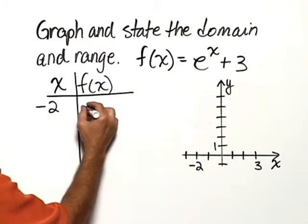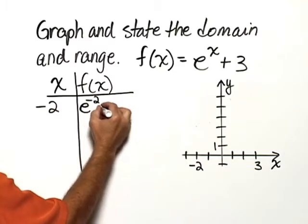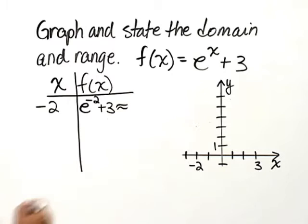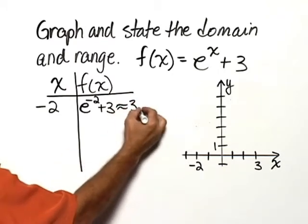That would be e to the negative 2 plus 3. And when we evaluate that on a calculator, we'll find it's approximately equal to 3.1.